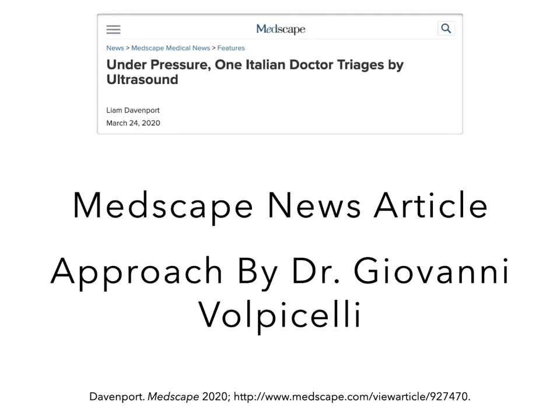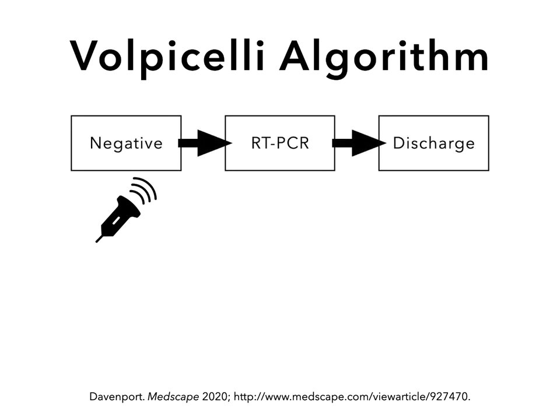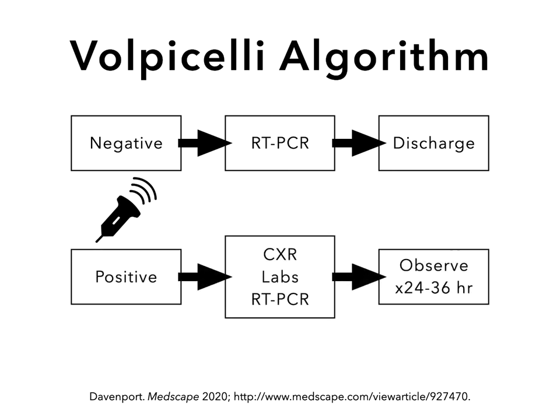Finally, let's talk about how we apply lung ultrasound to the current COVID pandemic. Screening is an area of major interest. Medscape News published an article about an approach by Giovanni Volpecelli, an Italian lung ultrasound expert who describes using lung ultrasound as a screening tool. If the lung ultrasound is negative — meaning the patient has A lines with no pleural abnormalities, B lines, or consolidation — he will order a swab for PCR and discharge the patient home. If the lung ultrasound is positive or suggestive of COVID, he will order a chest x-ray, labs, a swab for PCR, and admit the patient to an observation unit for 24 to 36 hours while awaiting test results.